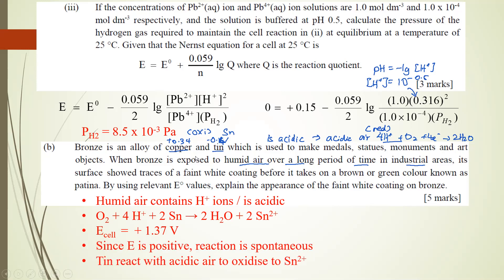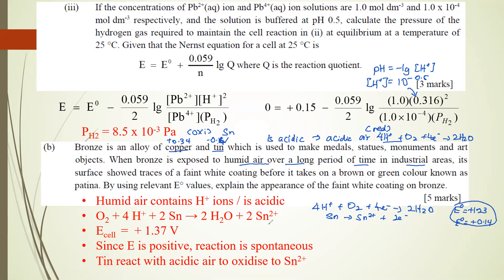Since E°cell is positive, the reaction is spontaneous — tin reacts with the acidic oxidizing air. The overall E°cell equals +1.37 V (sum of the E° values). Since E°cell is positive, the reaction is spontaneous and tin is oxidized to Sn2+. Write the equation, calculate E°cell, and state that the reaction is spontaneous to get full marks. That completes question four.